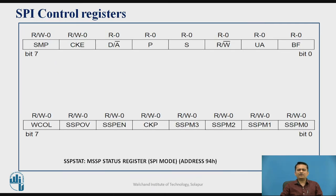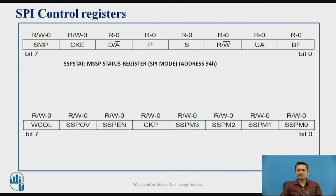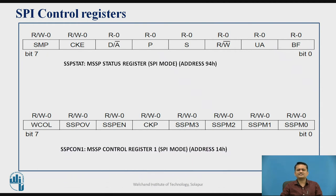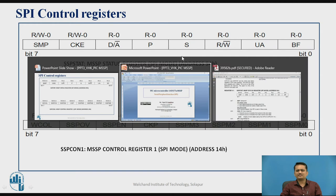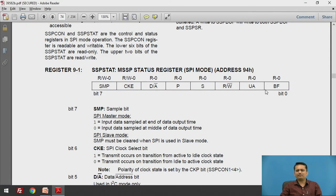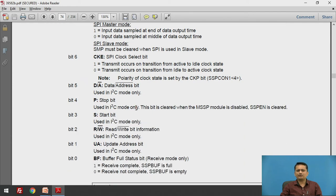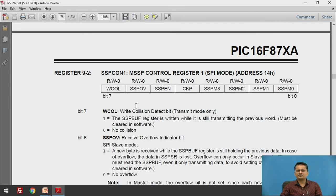These are the details of the two important special function registers for configuration or initialization of the PIC Microcontroller in SPI mode. One register is SSPSTAT and the other is SSPCON1. Each and every bit present in these registers has significance. Details of all these bits are available in the datasheet of the PIC Microcontroller as well as the user manual. Due to timing constraints, we will not go in depth here, but you can refer to the datasheet for the significance of each bit in these two registers.